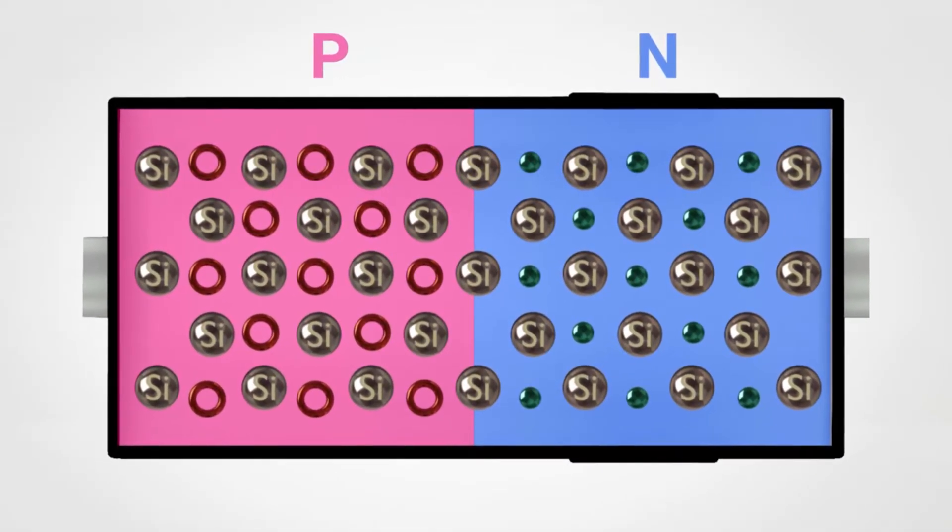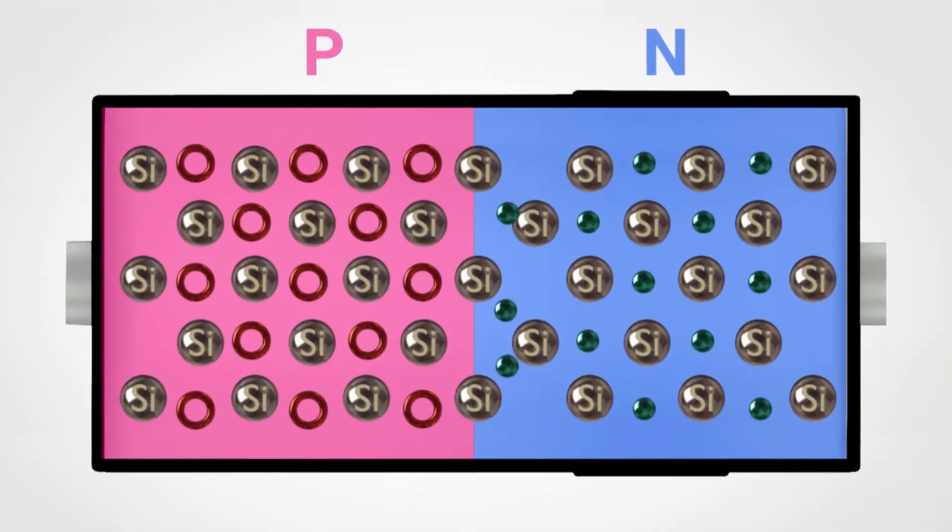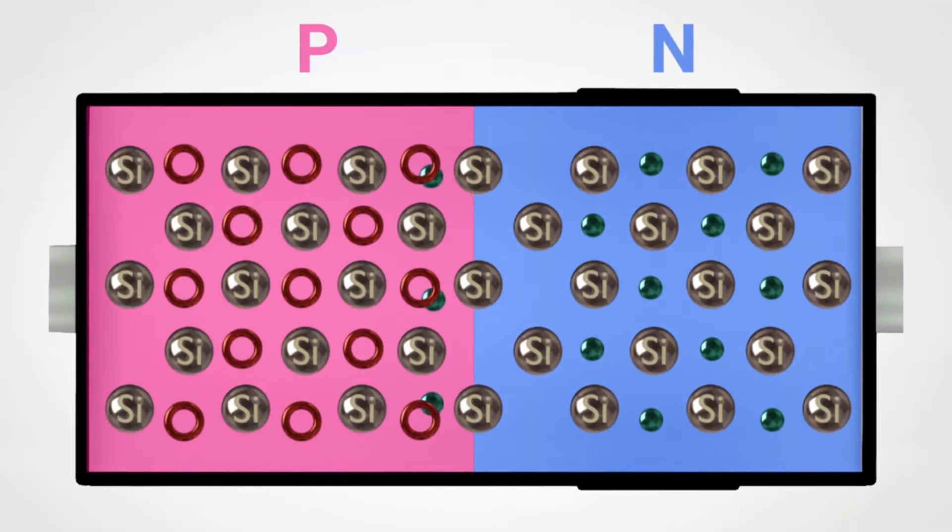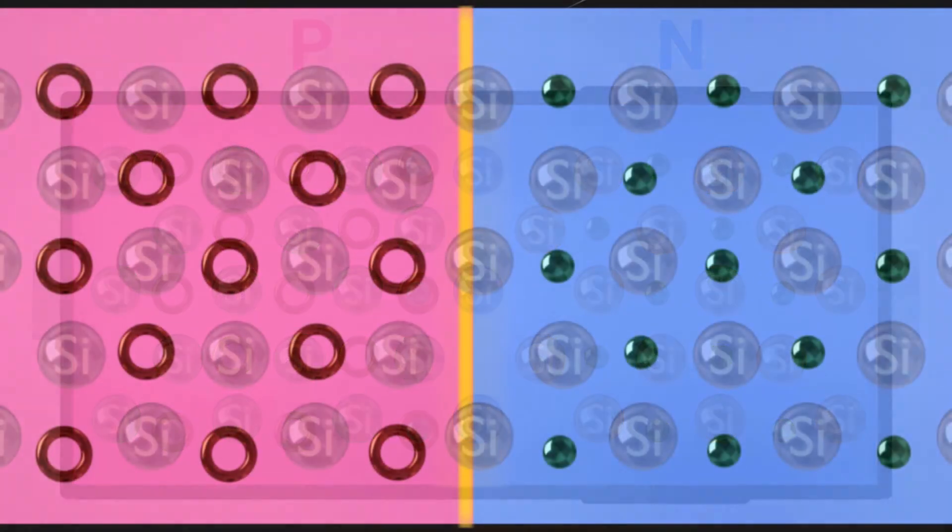When the electrons cross the potential barrier, their motion no longer meets resistance and will thus more easily occupy the holes in the P-zone.